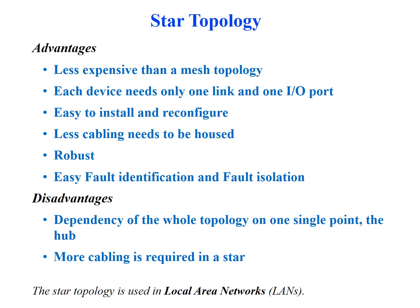One major disadvantage of star topology is its dependence on a single point — the hub. If the hub goes down, the entire network stops working. Additionally, since each device must connect to the central hub, more cabling is required overall. These are the two major disadvantages. Star topology is used in LANs — local area networks — such as those in offices.